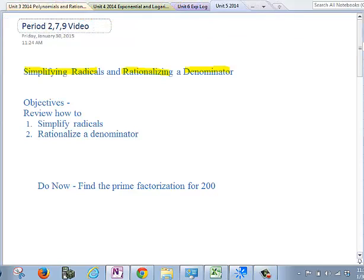On the first part, we want to go over how to simplify radicals. So as a Do Now, if you can, find me the prime factorization for 200. That means what prime numbers would multiply to 200? I'm going to write down pause, and what I'd like you to do is pause the video, see if you can do it, and when you come back to the video, I will work out the solution.